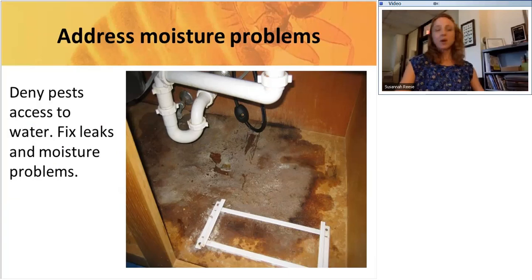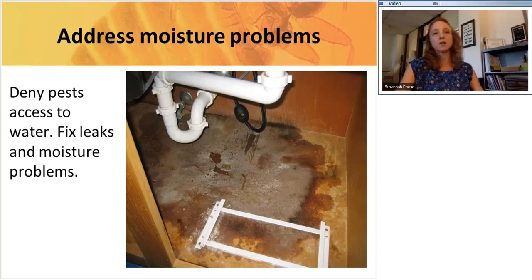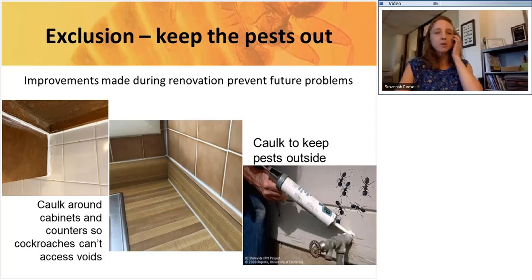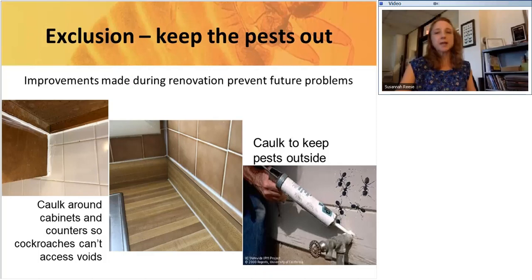You must also address moisture problems. Mice don't necessarily need a lot of water, but cockroaches very much do. Most pest problems in homes occur in the kitchen and bathrooms where the food, moisture, and heat is. Develop an exclusion plan — keeping pests out is very important. Limit where they can hide. This means doing good caulk jobs at unit turnover and renovations: caulking around kitchen counters and cabinets so cockroaches can't get behind them, and caulking around exterior plumbing and all holes in the exterior that can be access points for rodents and other pests like ants.